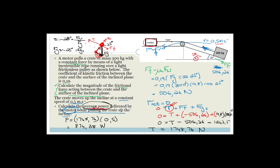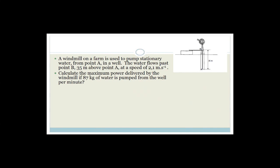That's a Grade 12 exam paper question — likely from a prelim paper. Now: a windmill on a farm is used to pump stationary water from point A in a well up 35 meters to point B, where the water flows at a speed of 2.1 meters per second. Calculate the maximum power delivered by the windmill if 87 kilograms of water is pumped from the well per minute.